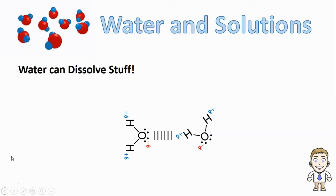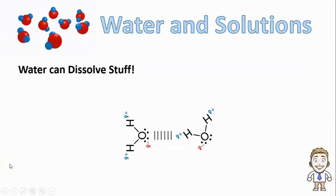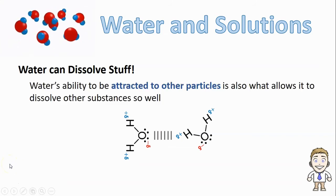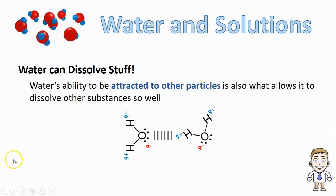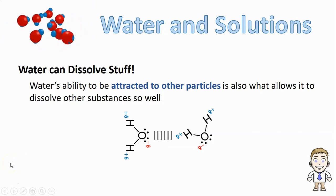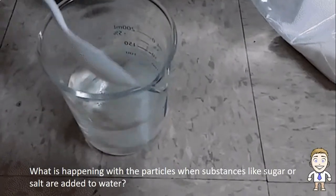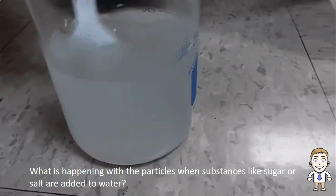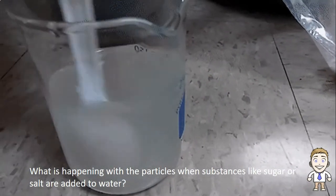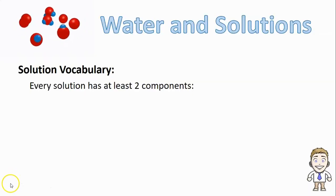Water molecules have this unique ability to be attracted to each other, but not just to each other — water molecules also have an ability to be attracted to other particles as well. This is what allows water to be so good at dissolving other substances. What we're going to be looking at in this video is what's happening with the particles in things like sugar or salt — a process we've seen many times. We know that when we add salt or sugar to water and stir it around, that sugar or salt dissolves, and we're going to be looking at the particles and describing exactly what's happening.